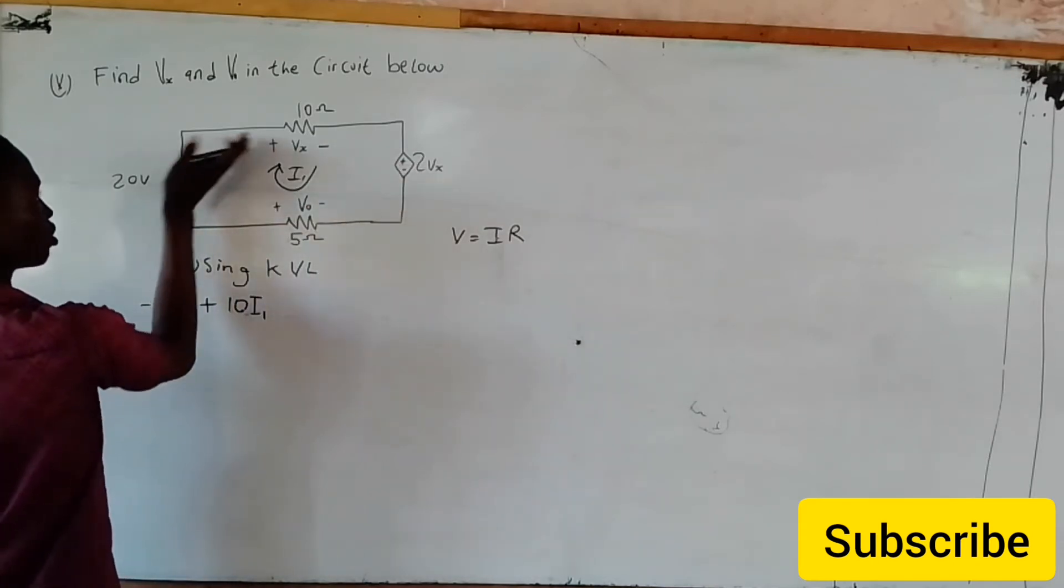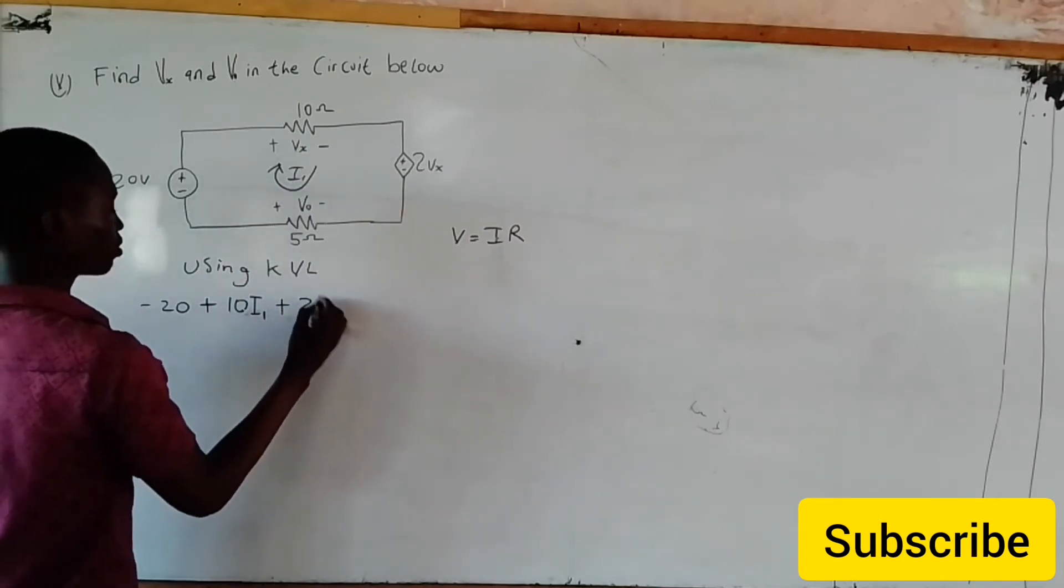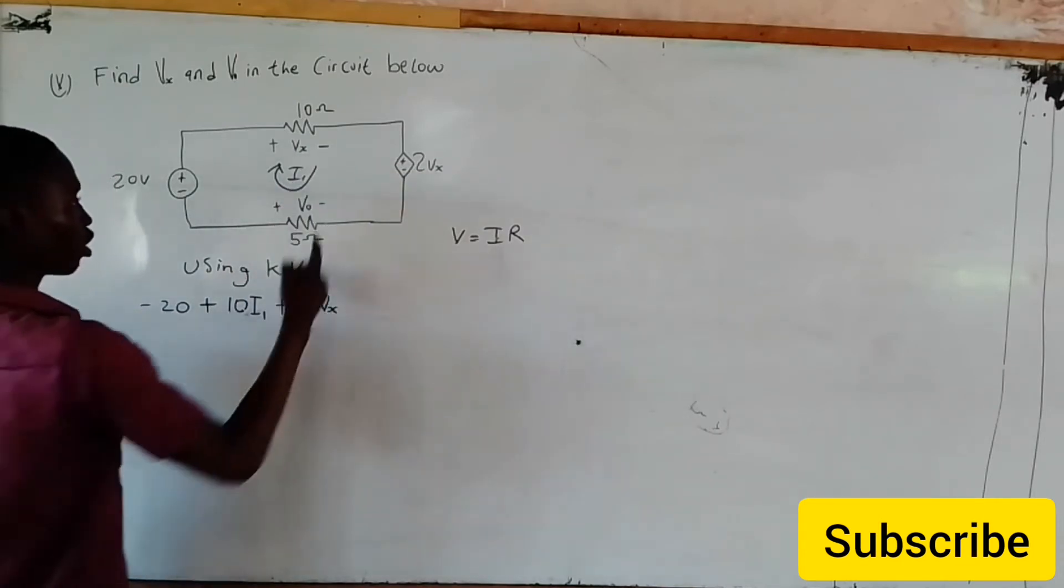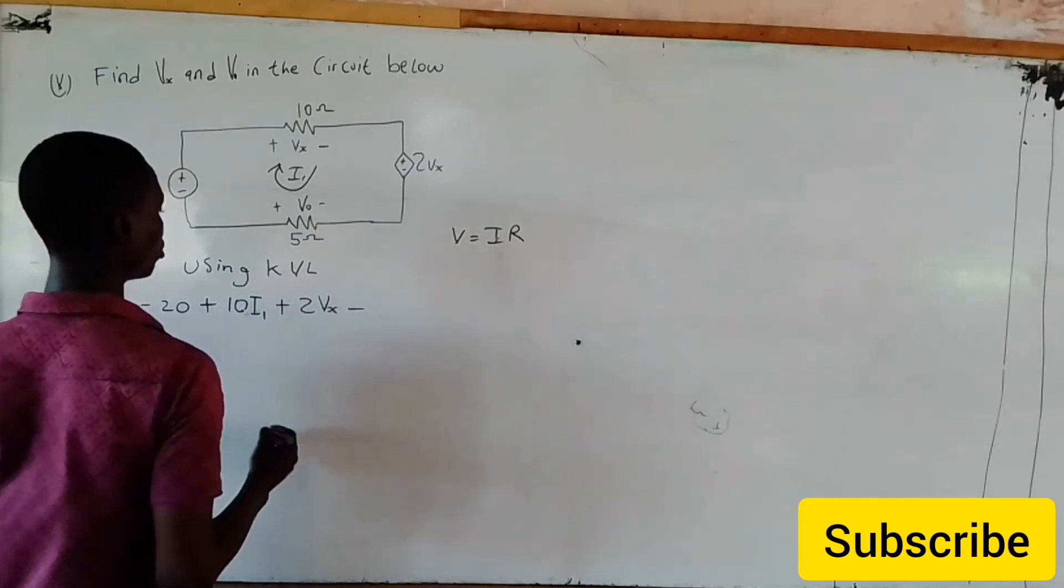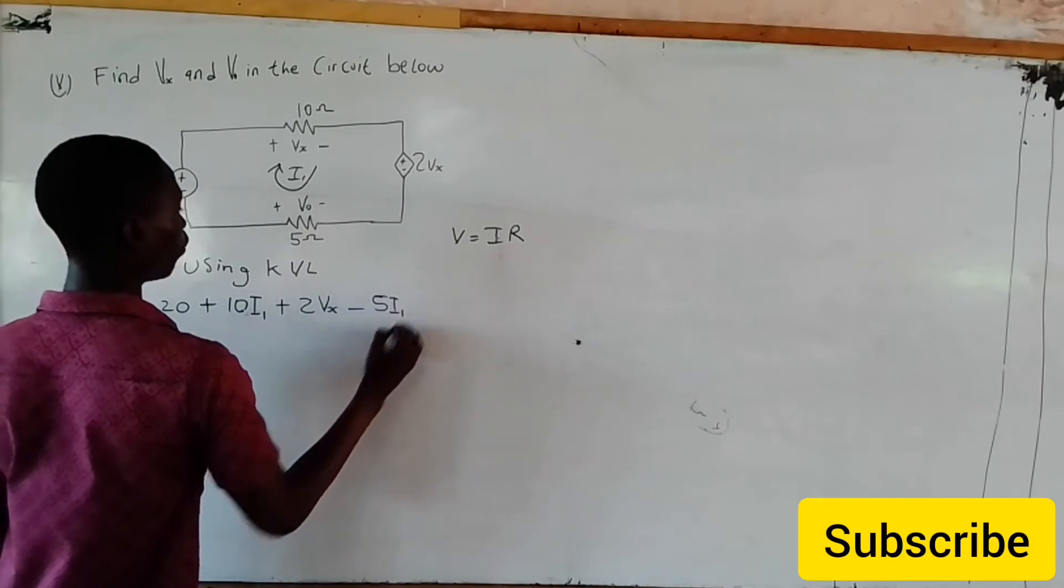It goes minus, minus, plus. It comes here and becomes plus 2Vs. Come to here and becomes minus V0 or minus 5I1.